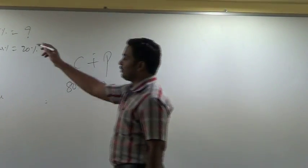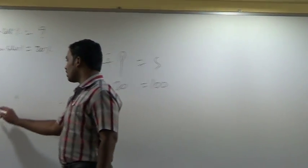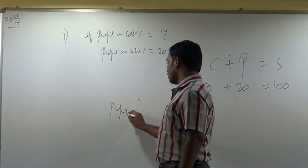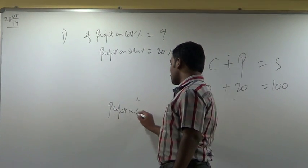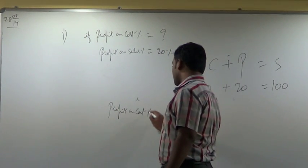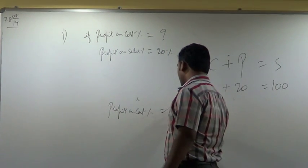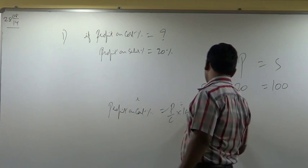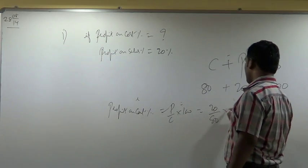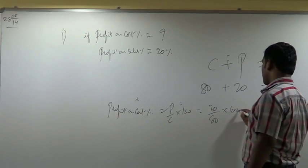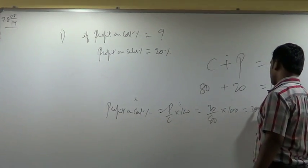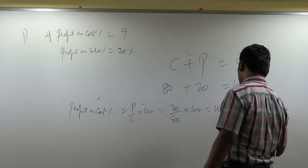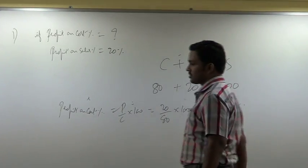Now what do I want? Profit on cost percentage. Profit on cost percentage is equal to P divided by C into 100. P is 20, C is 80, into 100 — it is 25% on cost.